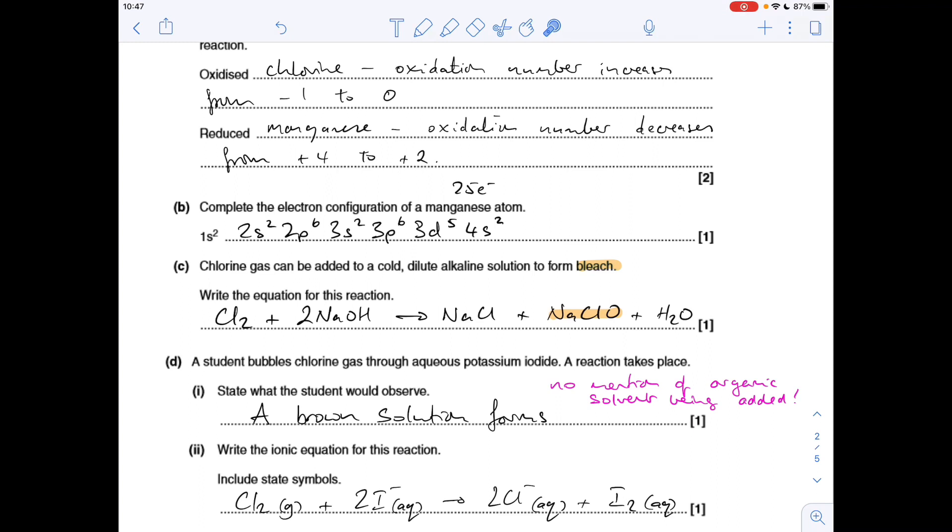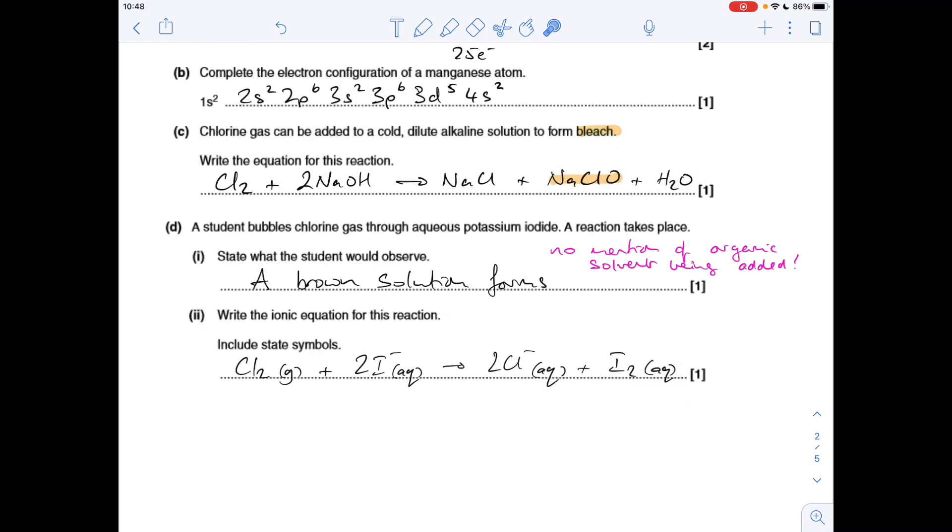Part D, so chlorine is bubbled through aqueous potassium iodide, a reaction takes place. What would the student observe? There's no mention of organic solvent here so it's the aqueous color of halogens we're being tested on. Chlorine is more reactive, a more powerful oxidizing agent than iodine, so it's going to displace the iodide. It's basically taking the electron off there, so chlorine becomes chloride, iodide becomes aqueous iodine, and that's a brown solution. So that's what you would observe.